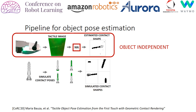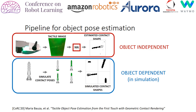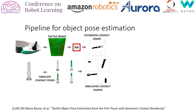We also have a way that, given the object model, we can simulate contact shapes. This is object-dependent, but it is all done in simulation, meaning we do not need any real contact with the object before computing those simulated contact shapes. Now that we have a way to estimate contact shapes and a way to simulate them, the next question is: can we find the simulated one that matches the one given by the sensor?